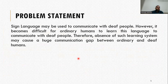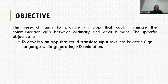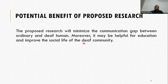The problem statement is that sign language may be used to communicate with deaf people; however, it becomes difficult for ordinary humans to learn this language. Therefore, the absence of such a learning system may cause a huge communication gap between ordinary and deaf humans. In Pakistan, we have developed Pakistan Sign Language, but we need a system that may translate text into Pakistan Sign Language using 3D animations. The objective of this work is to develop an app that could translate input text into Pakistan Sign Language while generating 3D animation, thereby minimizing the communication gap and improving the social life of the deaf or mute community.